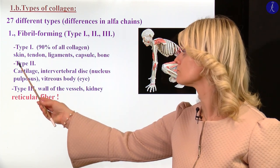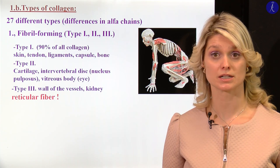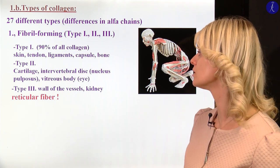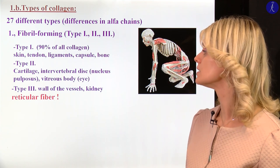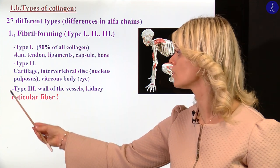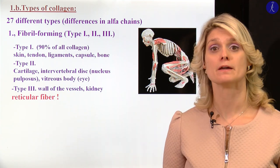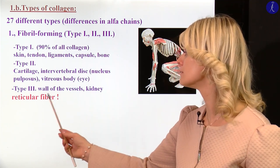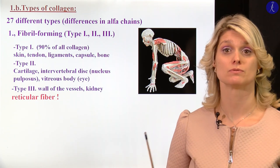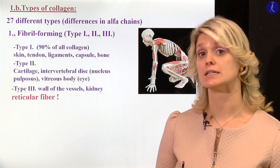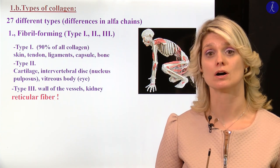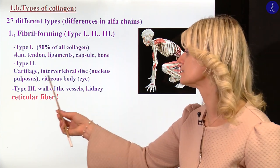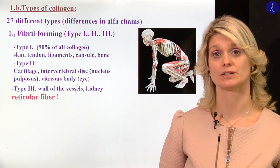Type 2 collagen fibers we can find in the cartilage — in the hyaline cartilage — and in the vitreous body of the eye. Type 3 collagen fibers form a meshwork, and that is why we call them reticular fibers. We can find them in all of the vessels, in the kidney, and in the parenchymal organs. I will tell you in detail the characteristics of the reticular fibers.